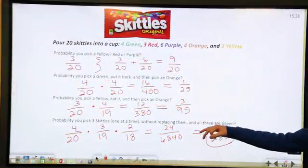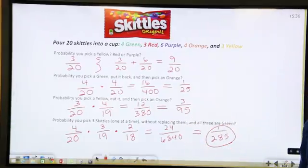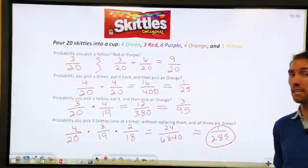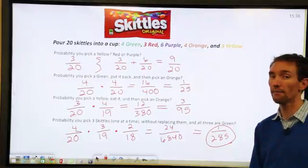So it would make sense that if there's only 4 greens out of 20 possible ones and you want to pick 3 of them and all 3 of them are going to be green, it's not going to happen too often. About 1 out of every 285 times.